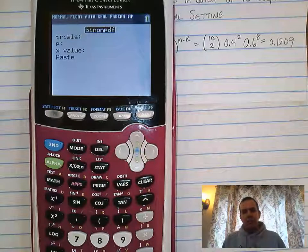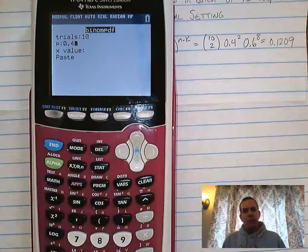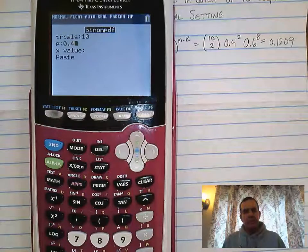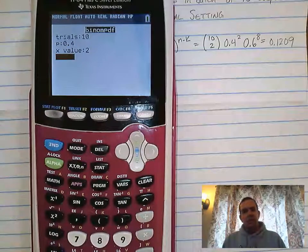It's going to ask us for our number of trials. In this case, our number of trials is 10. P is our probability of success. This will always be a decimal. So in this case, our probability of success is 40%. X value is your number of successes, so in this case it's two.